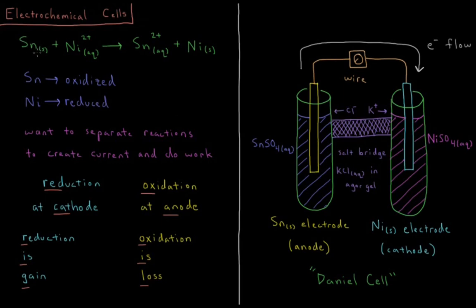We have solid tin plus ions of nickel in aqueous solution, so they have an ionization state of 2+, they're cations, and this reaction proceeds such that we have at the end of it tin ions in aqueous solution plus solid nickel.